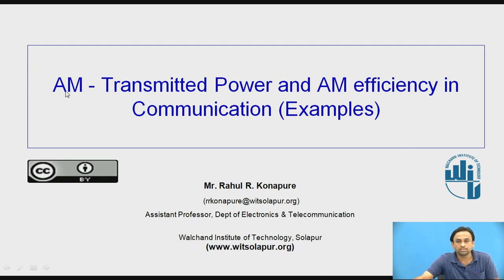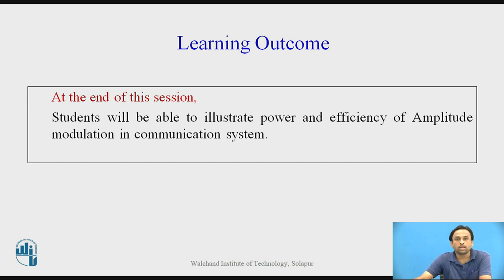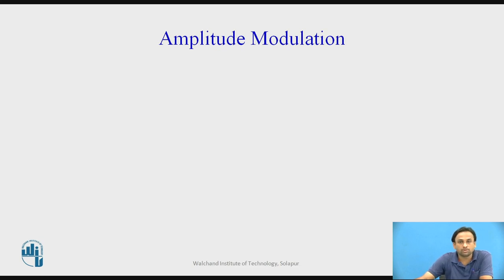Welcome to the next lecture on amplitude modulation, transmitted power, and AM efficiency in communications. We'll understand transmitted power and AM efficiencies through examples. The learning outcome is that students will be able to illustrate the power and efficiency of an amplitude modulation communication system. Recall that the total power required to transmit an AM signal is PT = PC + P_LSB + P_USB, and bandwidth is 2FM.